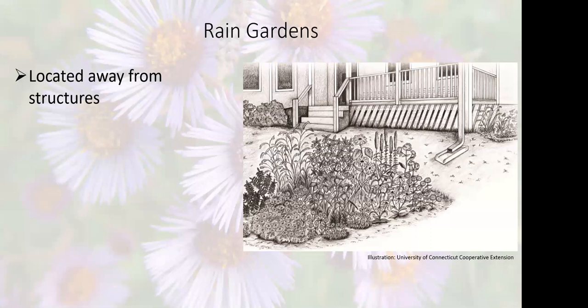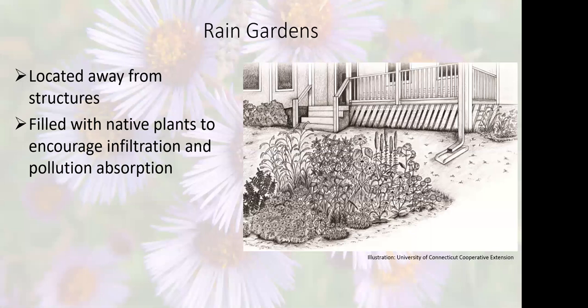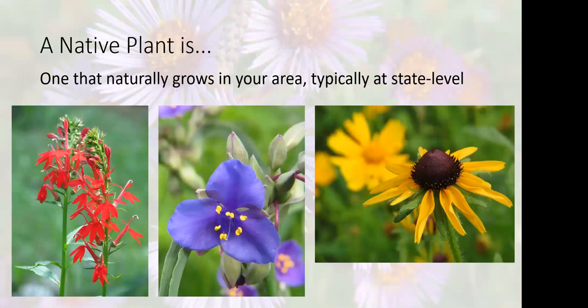Rain gardens should be located at least 10 feet away from structures, and at the bottom end — the downslope side — there should be an outlet in case your rain garden fills up completely during a heavy storm, so water overflows away from the house rather than toward it. These areas are filled with native plants to encourage infiltration and absorption of any pollutants in that water.